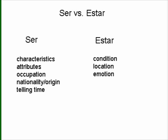Estar is used to talk about condition, location, and emotion. Again, there are other uses of the verb estar that you will learn later on, but for now these are the three important things.